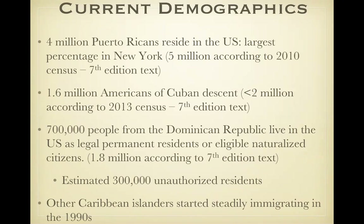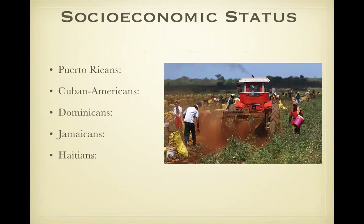Current demographics. There are about five million Puerto Ricans in the U.S., increased from previously four million. Puerto Ricans have established themselves in cities such as Boston, Chicago, Philadelphia, Newark, Cleveland, Miami, San Francisco, etc. 25% of Puerto Ricans make New York their home. Cubans: there are just under two million according to the 2013 census, and many Cubans settle in Miami because the climate is similar to their native land. There are many people from the Dominican Republic; an estimated 300,000 illegal residents have immigrated from there. Jamaicans: 965,000 immigrants; Haitians: 881,000 Haitian immigrants.